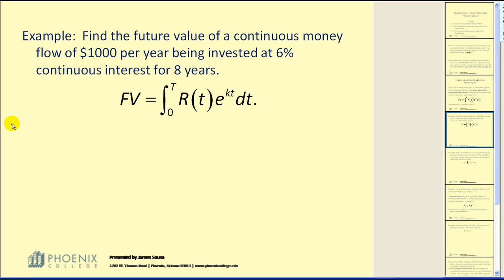The future value will be equal to the integral from zero to eight because it's eight years. R of T is the amount put into the account per year, $1,000, times e to the power of KT, point zero six T, DT.